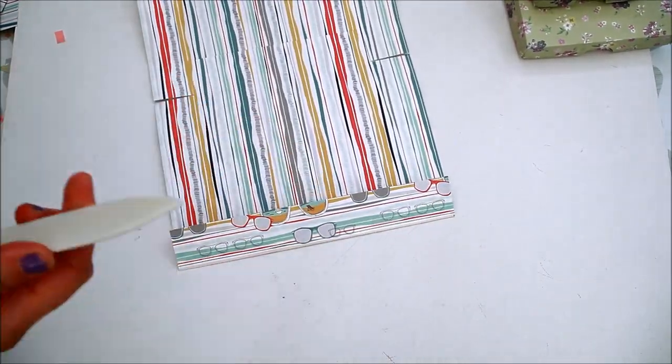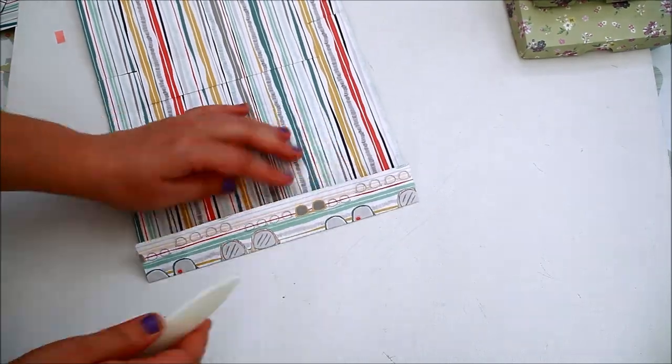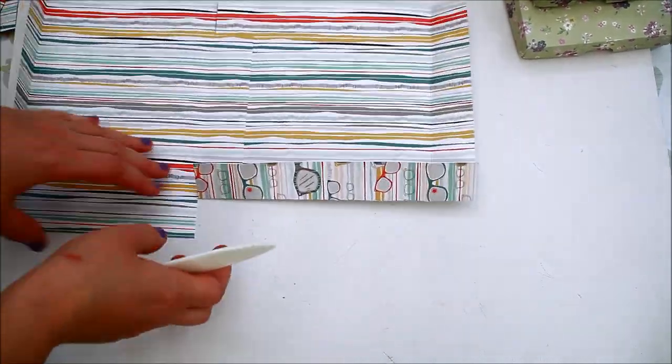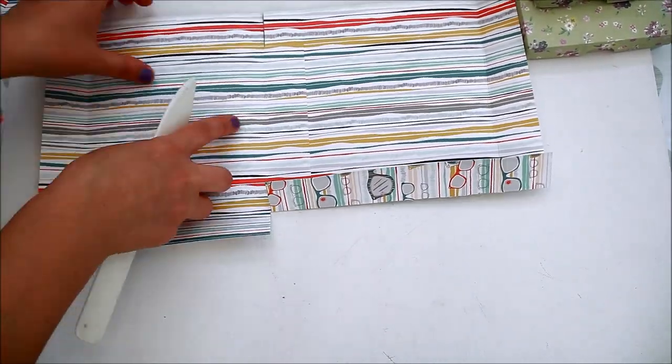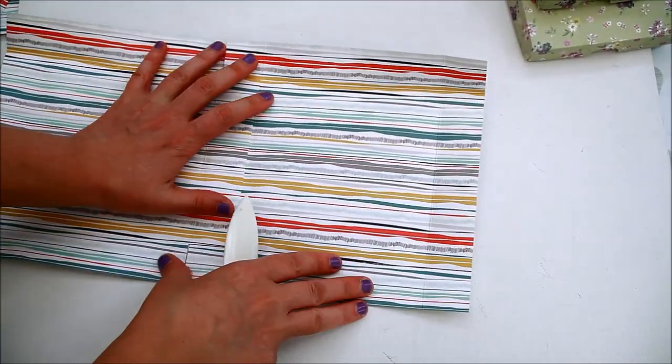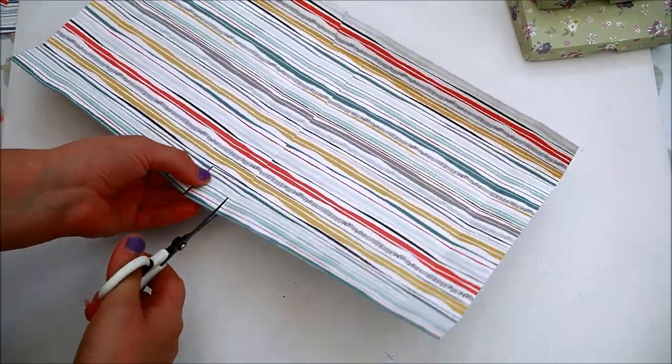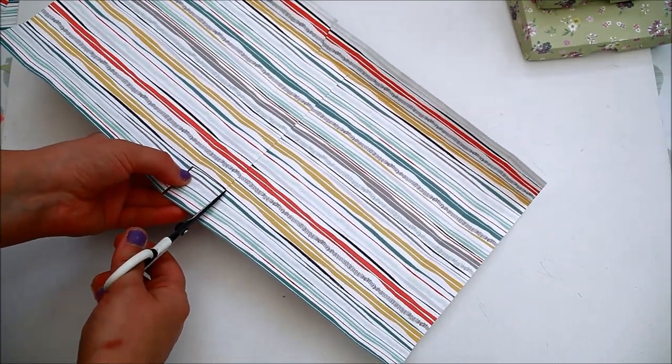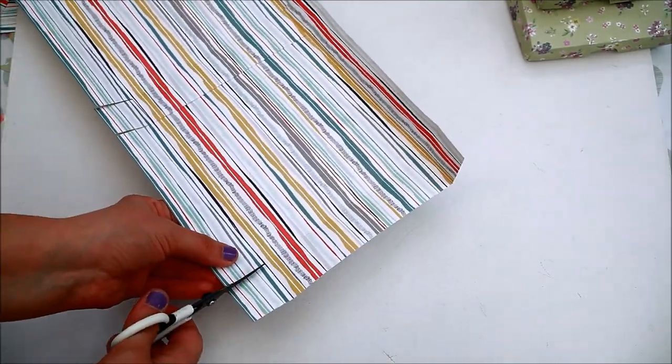The next steps are similar to the ones for the other boxes. So now I'm folding and burnishing everything, then cut the slits on the sides.